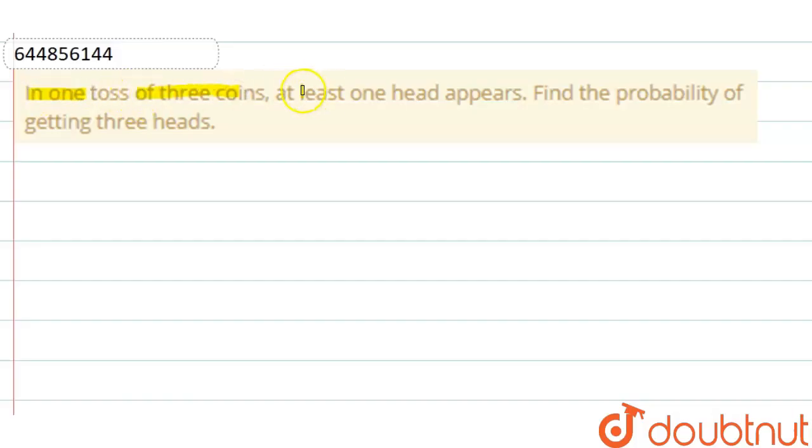In one toss of three coins, at least one head appears. Find the probability of getting three heads.